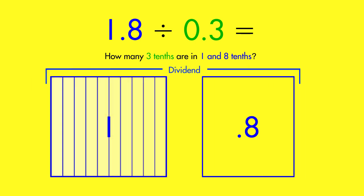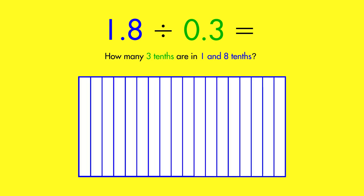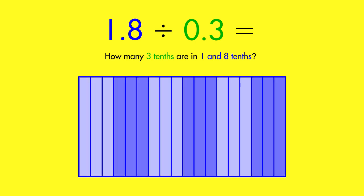So, split the entire dividend into tenths, and then place those tenths into groups of 3. Then, count up the number of groups.